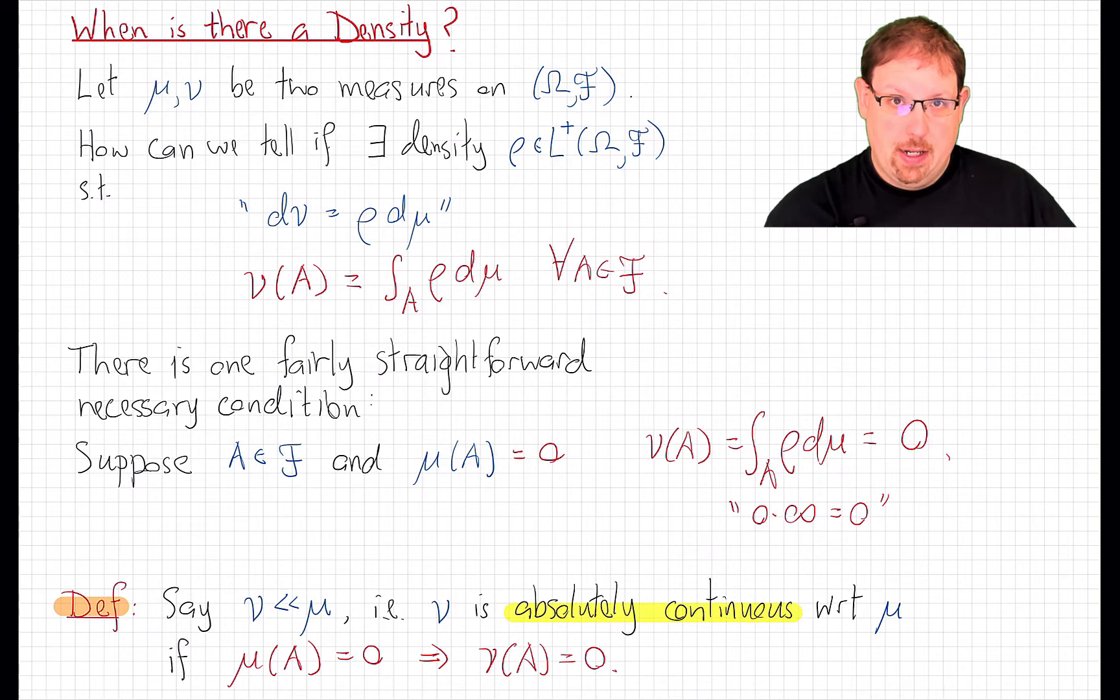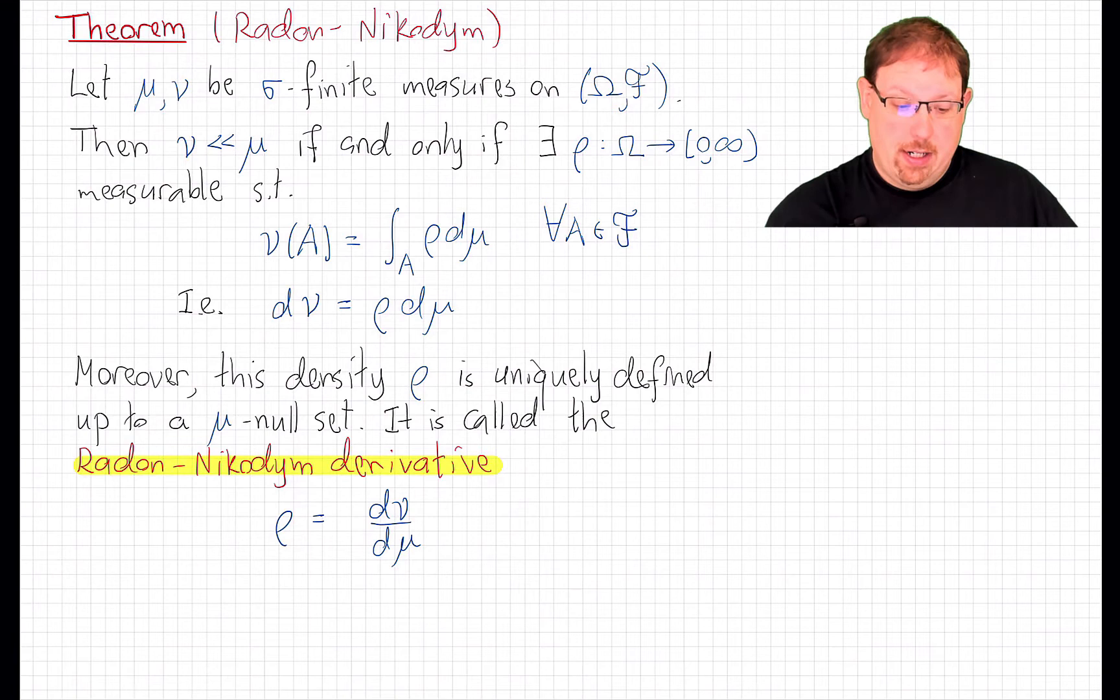Absolute continuity implies the existence of a density. And that is the Radon-Nikodym theorem. It applies in the case where the measures are sigma-finite. In our world, measures are typically going to be finite, so this is no impediment. Given two sigma-finite measures on a measurable space, one is absolutely continuous with respect to the other, if and only if there exists a density comparing the two. That is, if and only if rho of any set is calculated by integrating that density over the set A. And again, for shorthand, we write that as d nu is equal to rho d mu.